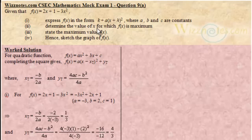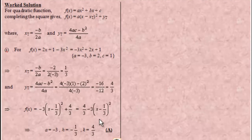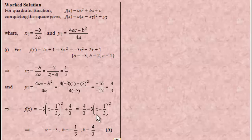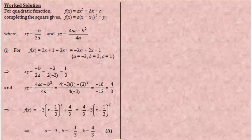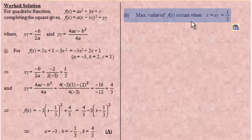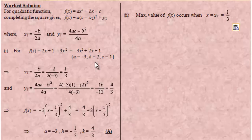The second part says we have to determine the value of x for which f of x is maximum. Now f of x is going to be maximum when x is equal to xt. Because when x is equal to xt — which is 1 third — you'll find that 1 third minus 1 third becomes zero, and f of x will have its highest value when this expression has its lowest value. So the maximum value occurs when x is equal to xt.